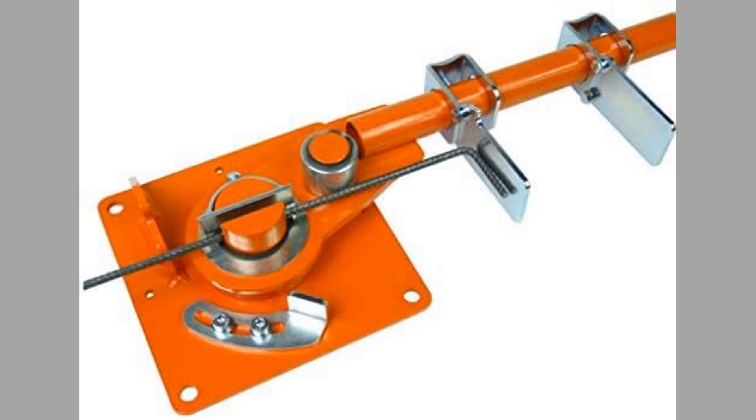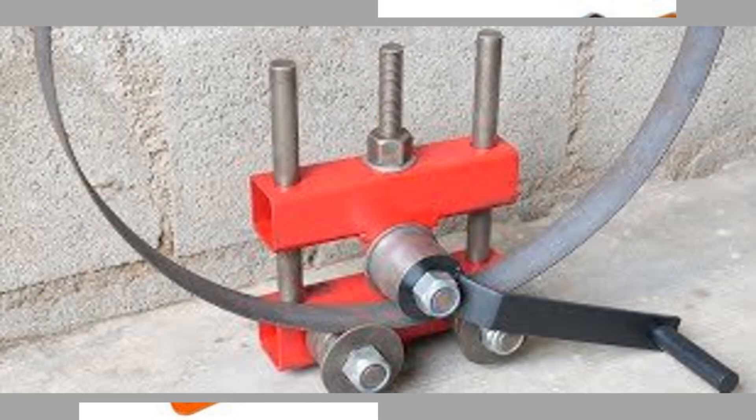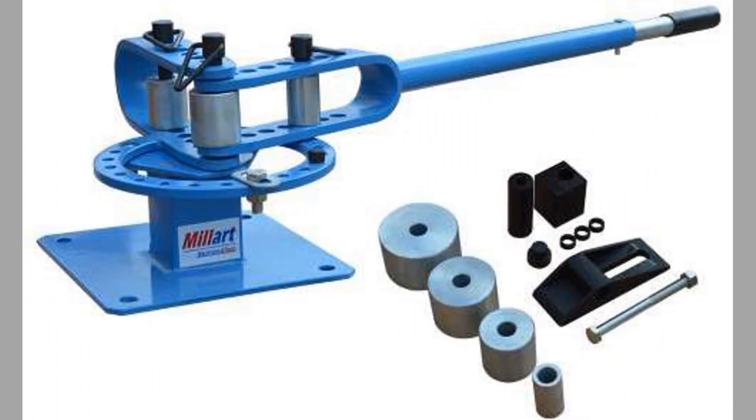Coining. In coining, the top tool forces the material into the bottom die with 5 to 30 times the force of air bending, causing permanent deformation through the sheet.